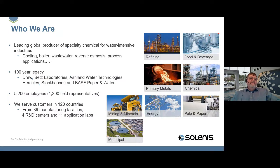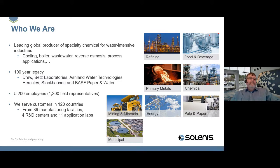Solanus is a leading global producer of specialty chemicals for water-intensive industries. We supply chemicals to help cooling and boiling, wastewater plants, reverse osmosis plants, and process applications. We have a legacy of 100 years through companies such as Drew and Betts, Ashland Water Technologies, Hercules, and Stockhausen. There are 5,200 people working for our company — over 1,300 in the field helping customers directly. We serve customers in over 120 countries from 39 manufacturing facilities, 4 R&D centres, and 11 application laboratories.